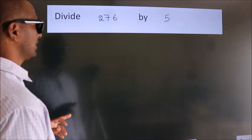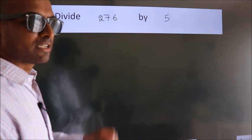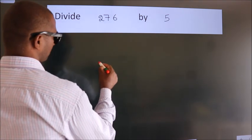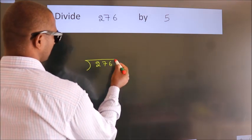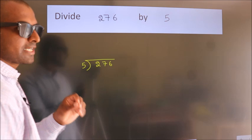Divide 276 by 5. To do this division, we should frame it in this way. 276 here, 5 here. This is your step 1.